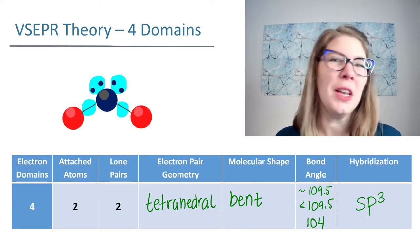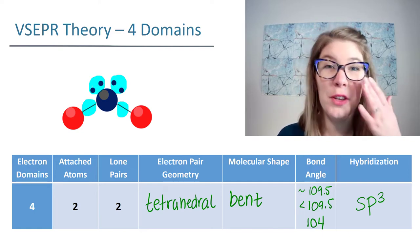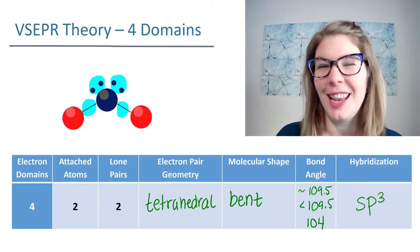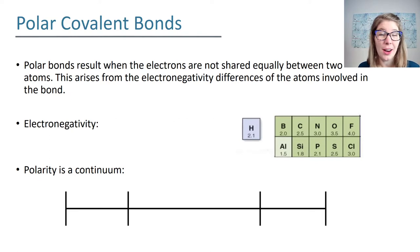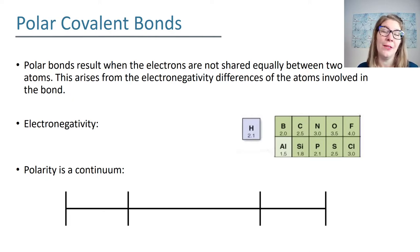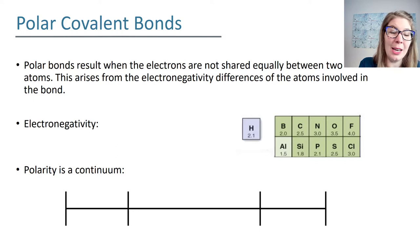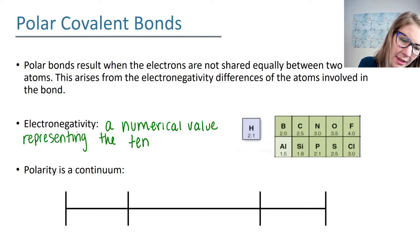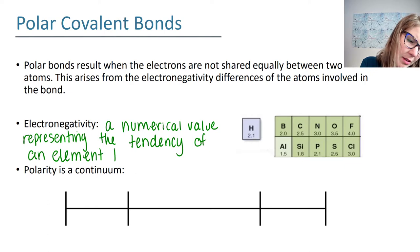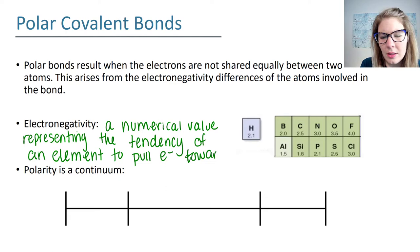Now we've wrapped up VSEPR theory and we're going to move into molecule polarity. Before we can talk about molecule polarity, we need to talk about polar covalent bonds. Covalent bonds are where electrons are shared, and polar bonds are where electrons are shared unequally. This ends up happening when there is a significant difference in the electronegativity values of two atoms.